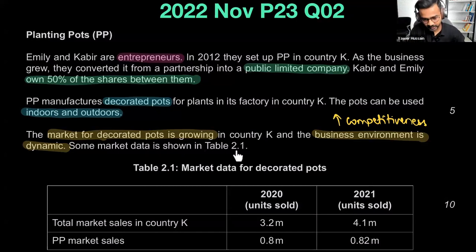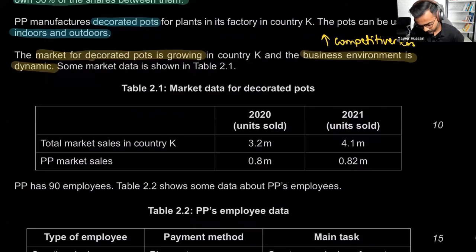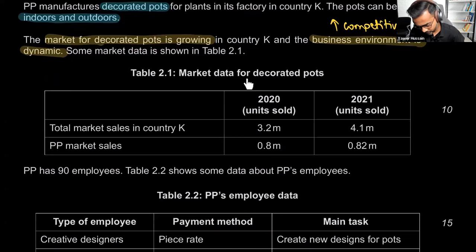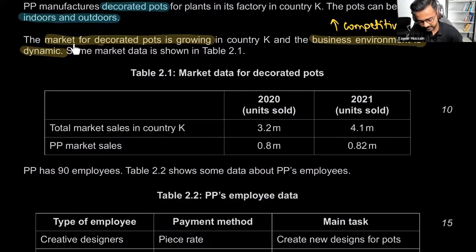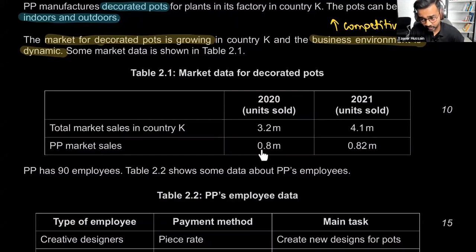Some data is shown in Table 2.1 — market data for decorated pots for 2020 and 2021. Total market sales in Country K: 3.5 million in 2020, increasing to 4.1 million in 2021. The market is growing, as the case study told us. However, PP's sales went from 0.8 million to 0.82 million. Just looking at these numbers, we get a sense they haven't grown as much as the market has.